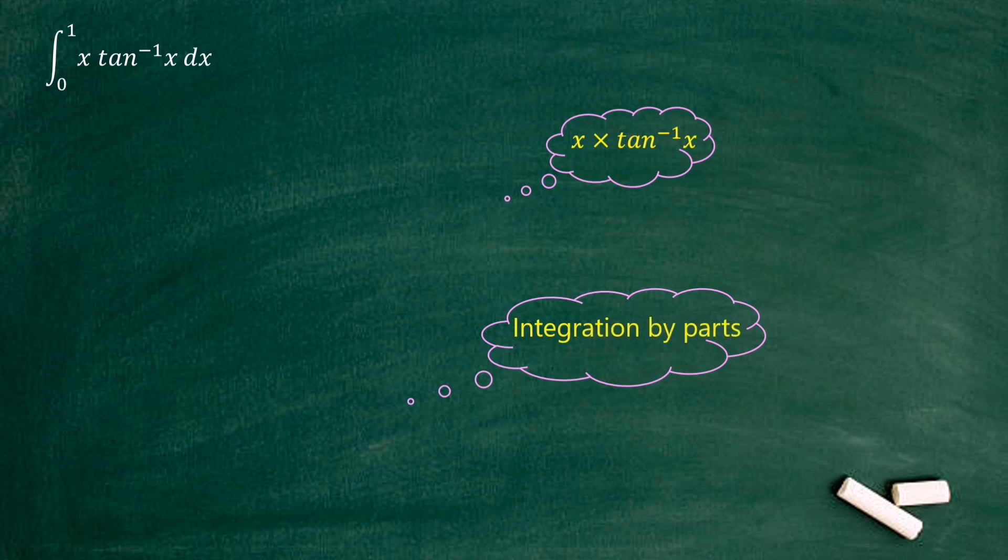We know the integral of x which is x squared over 2. But we don't have any direct equation for tan inverse x term. Therefore, we can prioritize the x term and use the tan inverse x term for the differentiation.